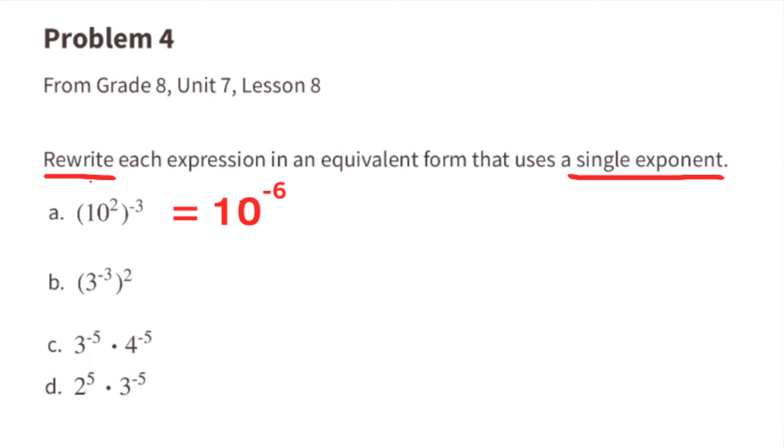Part B: 3 to the power of negative 3, all to the power of 2. Multiply the exponents, and you have the expression 3 to the power of negative 6.